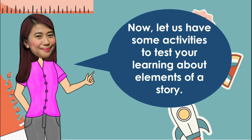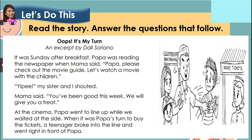Now, let us have some activities to test your learning about elements of a story. Are you ready? Let's go! Read the story and answer the questions that follow. The title of our story is 'Oops! It's my turn!'